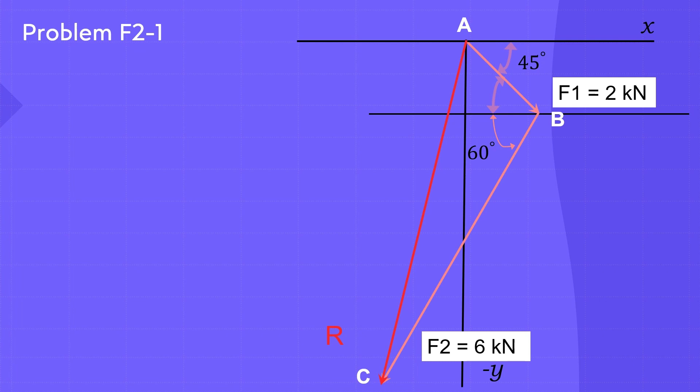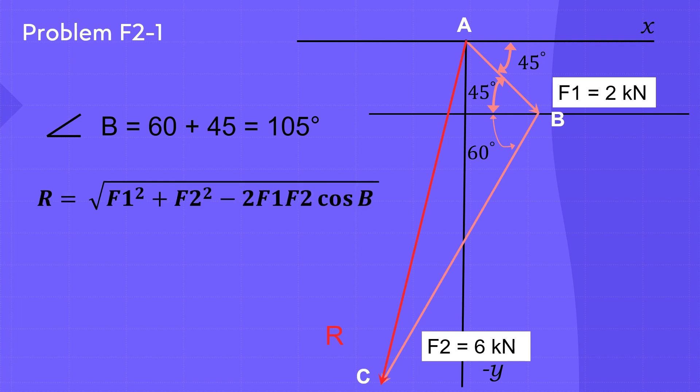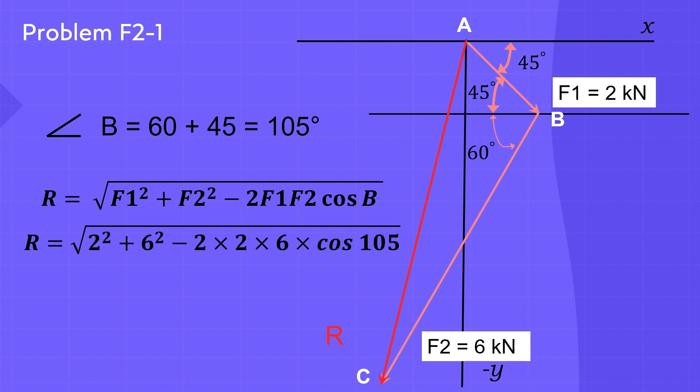These two angles are alternate angles, so they are equal. Consequently, angle B equals 60 plus 45, equal to 105 degrees. Applying the cosine law to find the magnitude of the resultant force results in R equals the square root of 2² plus 6² minus 2 multiplied by 2 multiplied by 6 multiplied by cosine 105. So the magnitude of the resultant force R equals 6.8 kilonewtons.